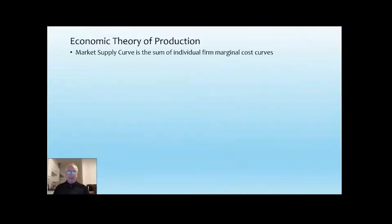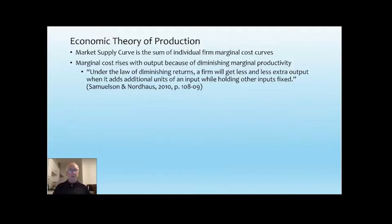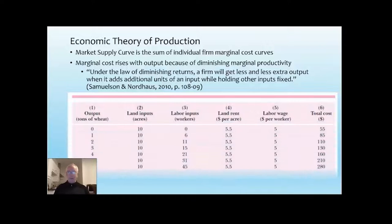The theory is that the supply curve is the sum of the marginal cost curves of individual firms in a given industry. Marginal cost for each firm rises because each firm faces diminishing marginal productivity, meaning each additional worker they add to production generates a falling level of output per worker. This is called the law of diminishing returns — the firm gets less and less extra output when it adds additional inputs while holding all other inputs fixed. This is another made-up example in a textbook.